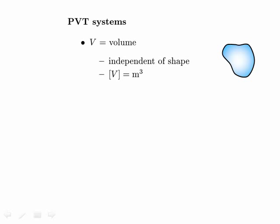Let's examine the three state variables for a PVT system. The easiest one is V, the volume. The key point about volume is that it's independent of the shape occupied by the system. The system can be in any shape of container — only the total volume matters. Volume is measured in meters cubed, which will be our basic unit of volume.